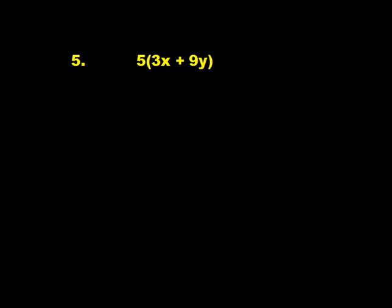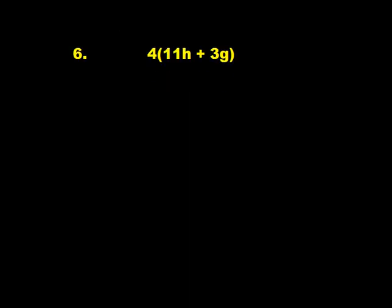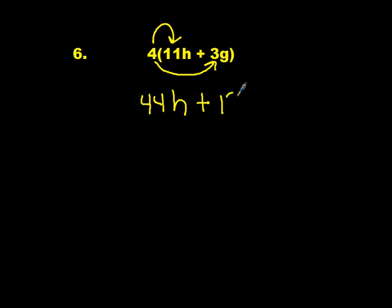Number 5: 5 times the sum of 3x plus 9y. Pause the video and come back when you are ready. I start with 5 times 3x which is 15x, plus 5 times 9y which is 45y. Number 6: 4 times the sum of 11h plus 3g. 4 times 11 is 44h, plus 4 times 3g which is 12g. I end up with 44h plus 12g.